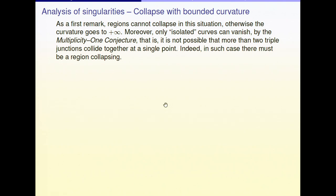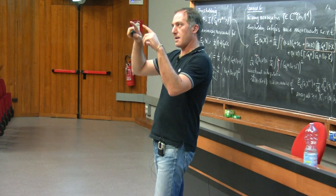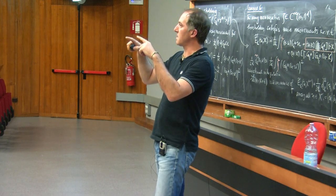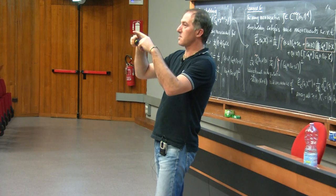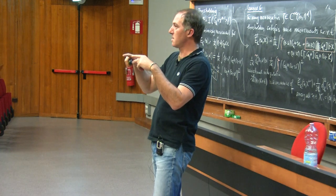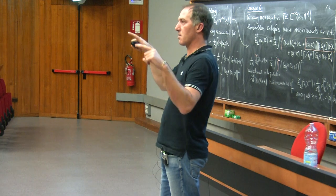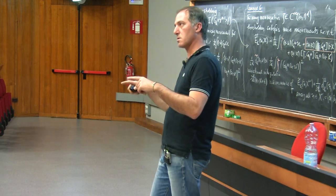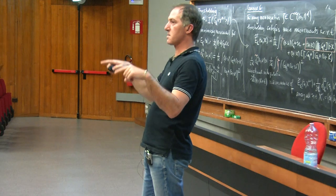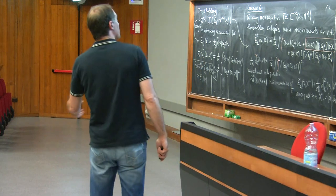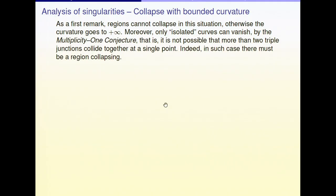If you consider a region with five edges, you have at most five angles of 120 degrees. If you consider a straight segment between these corners, there is not enough curvature to close. With only five angles of 120 degrees, you need some curvature in your region in order to close. With six you can — you can have straight hexagons — but less than six, your region in order to collapse has some curvature, and when a region collapses the curvature must go to plus infinity. It cannot stay bounded.